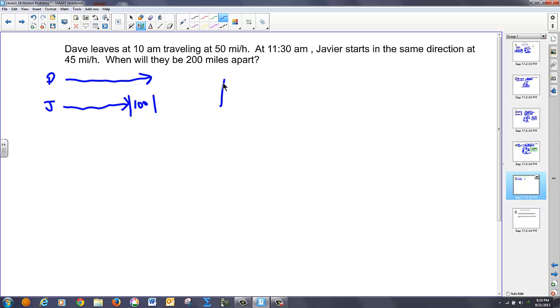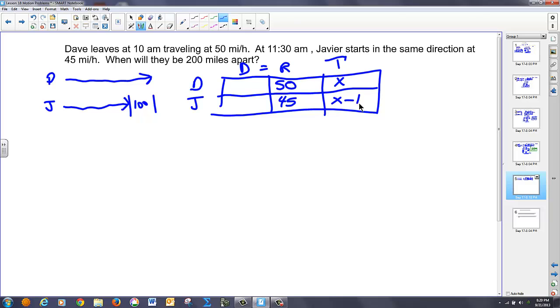So, in this case, we have again distance equals rate times time. We've got some rates. This is Dave and this is Javier. Dave's 50 miles an hour. Javier's 45 miles an hour. Dave leaves at 10 a.m. But that doesn't mean he travels 10 hours. So, he travels some unknown amount of time. And at 11:30 Javier takes off. So, he leaves an hour and a half later which means he's traveling an hour and a half less time. I'm going to go minus 1.5. Now, I multiply across and I get 50X here. It gets his distance expression and 45 times the quantity of X minus 1.5 here.